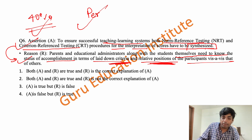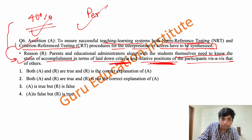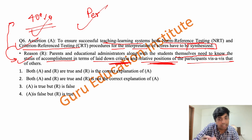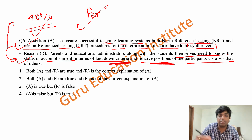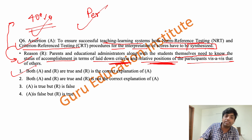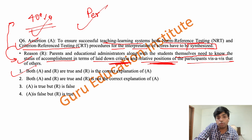This is because parents and educational administrators, along with students themselves, need to know the status of their accomplishment in terms of laid down criteria, relative position, etc. There is a clear connection between the two statements — criteria and norm reference testing is needed because parents and students want to know their relative position.